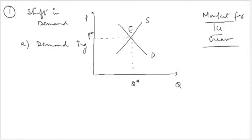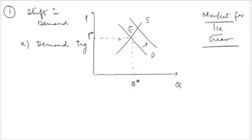Now because the weather has changed, it has resulted in a change in tastes and preferences. If you recall, one of the reasons for a shift in the demand curve is changes in tastes and preferences. So if people's tastes and preferences are changing, that will result in a change in the demand curve in the increasing direction — the demand curve will shift rightwards, meaning more quantity is demanded at the given prices.